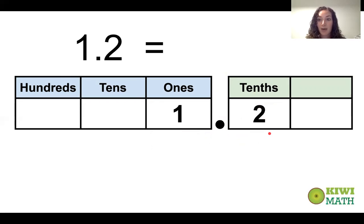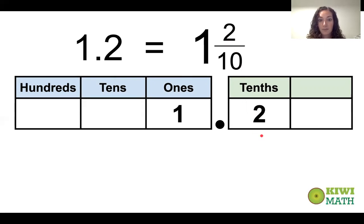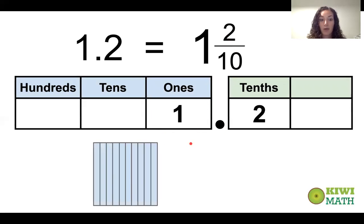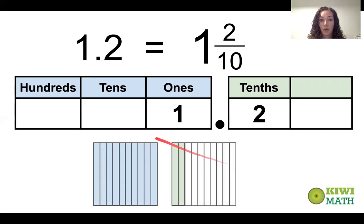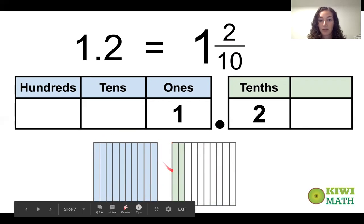If you think about how you would write 1.2 as a mixed number, one and two tenths, it would look like that. For the model, anything to the left of the decimal point is a whole number, so here we have one whole — one whole shaded in. And we need two tenths shaded in, so our model shows one whole and two tenths.